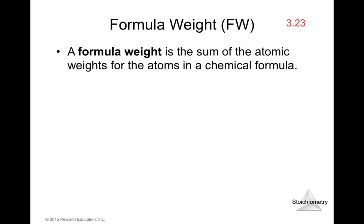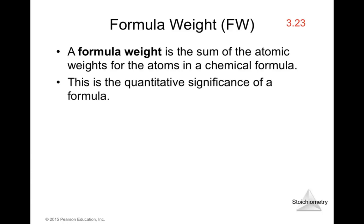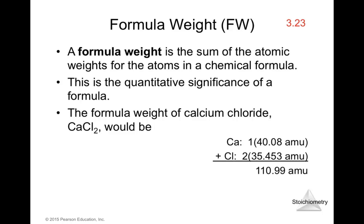The formula weight is the sum of atomic weights for all atoms in a chemical formula. For calcium chloride, CaCl2: one calcium times its atomic mass plus two chlorines times the atomic mass of chlorine gives a total formula weight of 110.99. Always remember to multiply the atomic mass by the number of atoms of that element present in the formula.